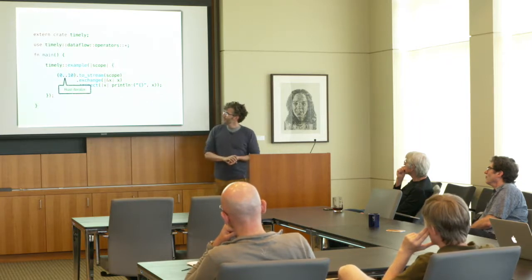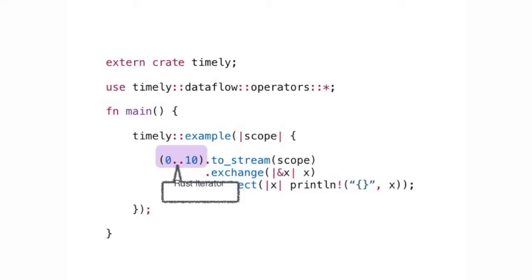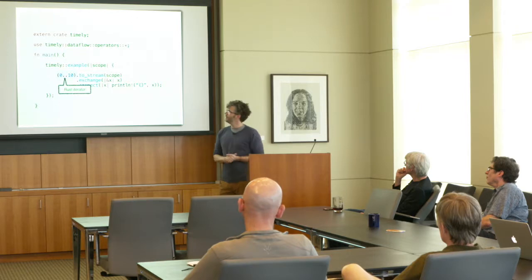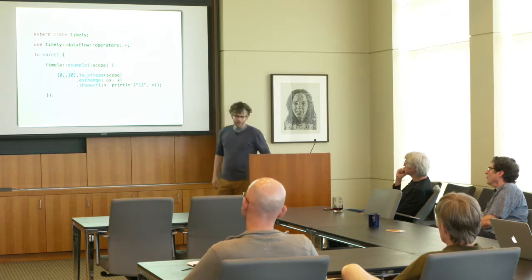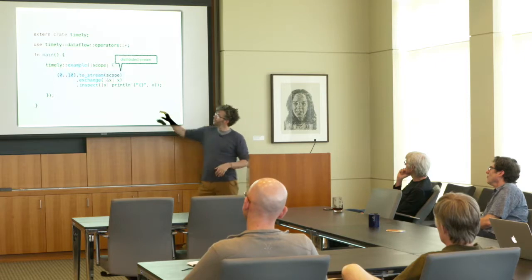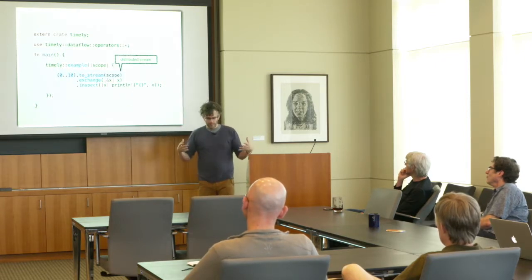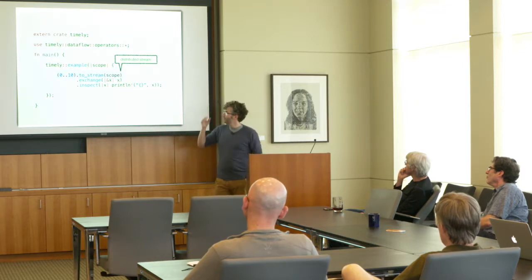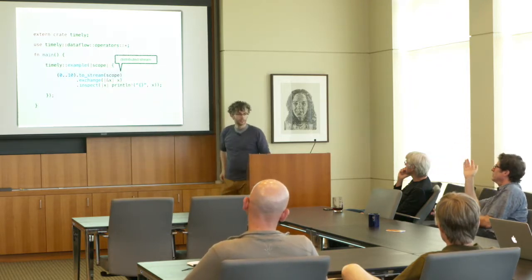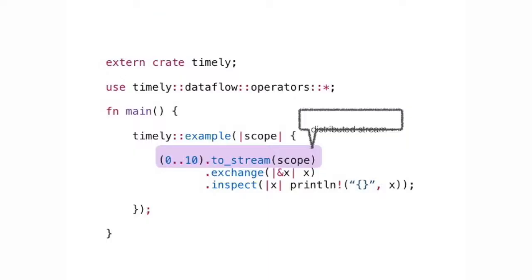In the spirit of language-integrated queries, the goal is to give you the look and feel of the host programming language — Rust. You can start from standard Rust iterators, which are bits of code that return things as you pull on them. There are adapters which take Rust iterators and ingest them into the dataflow computation. Once we've called this, all the workers and processes have a common frame of reference for talking about this distributed stream of data. The 0..10 is literally just the numbers 0 through 9.